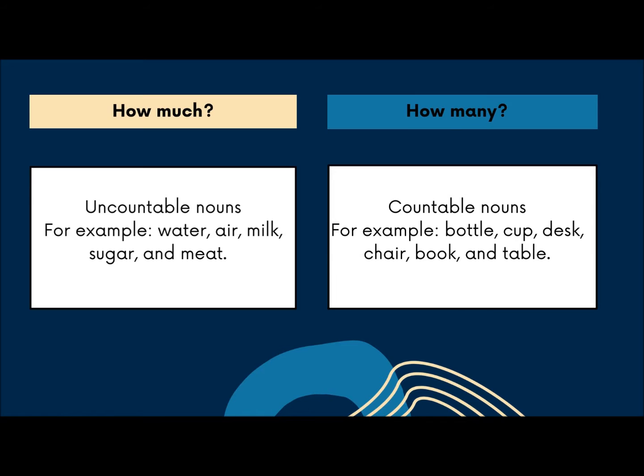For instance, how much is used with uncountable nouns. Uncountable nouns are nouns that cannot be counted. Some examples of uncountable nouns are water, air, milk, sugar, and meat.